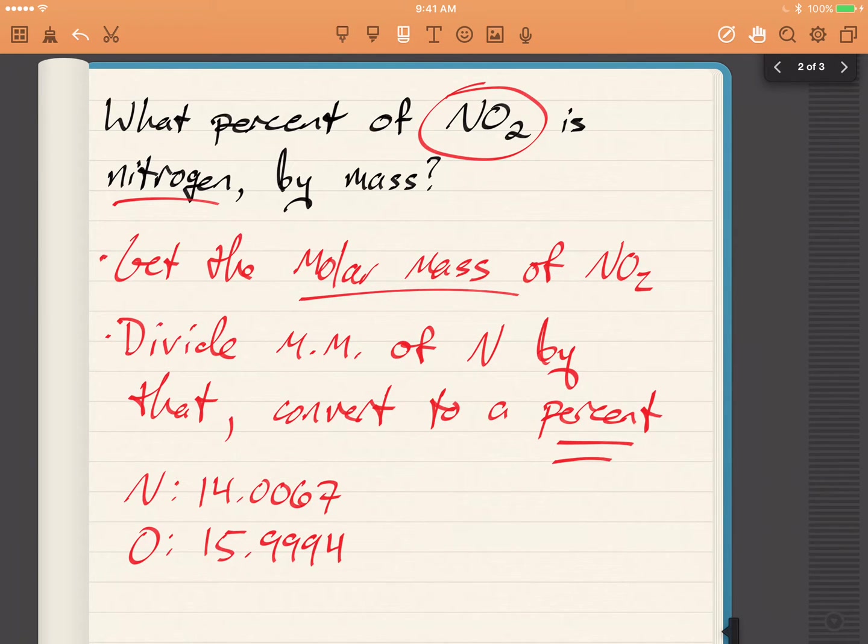For most purposes, you can ignore the very small decimals. So just to keep things simple, we'll say that that's 14, and 15.9994, we're going to call that 16. So now everybody's happy because the numbers are kind of easy and round.